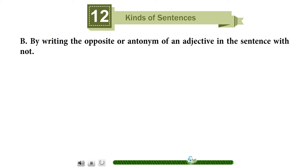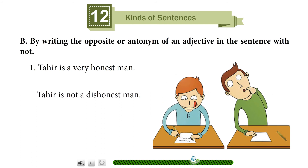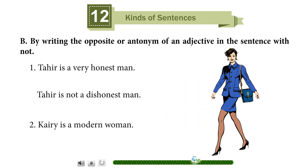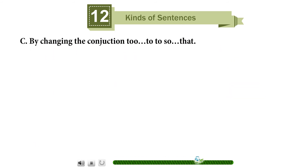Method B: by writing the opposite or antonym of the adjective in the sentence with 'not.' Example: 'Tahir is a very honest man' becomes 'Tahir is not a dishonest man.' 'Carrie is a modern woman' becomes 'Carrie is not an old-fashioned woman.'